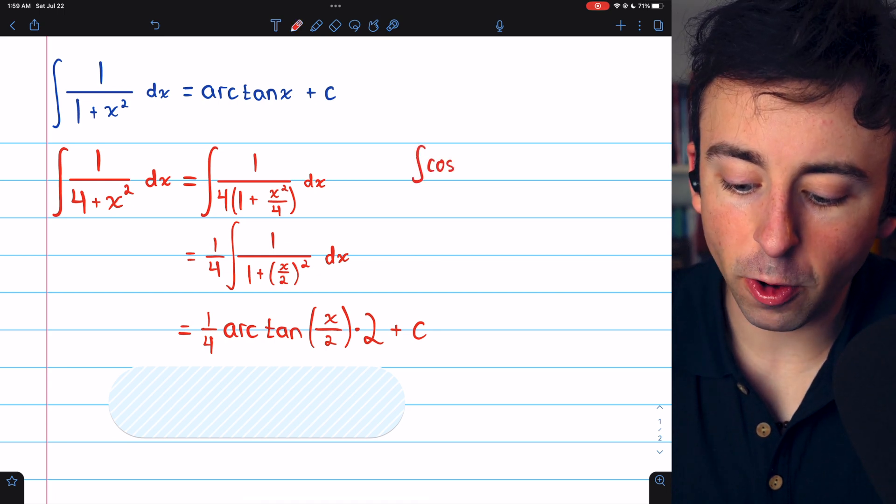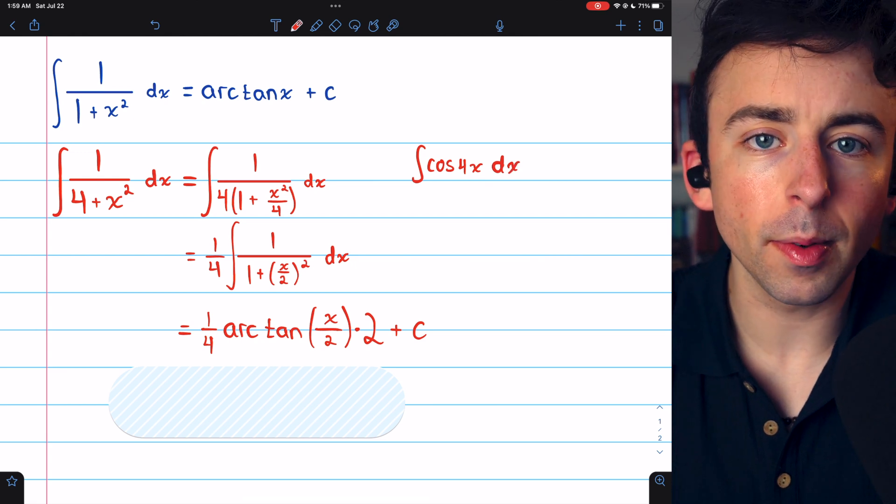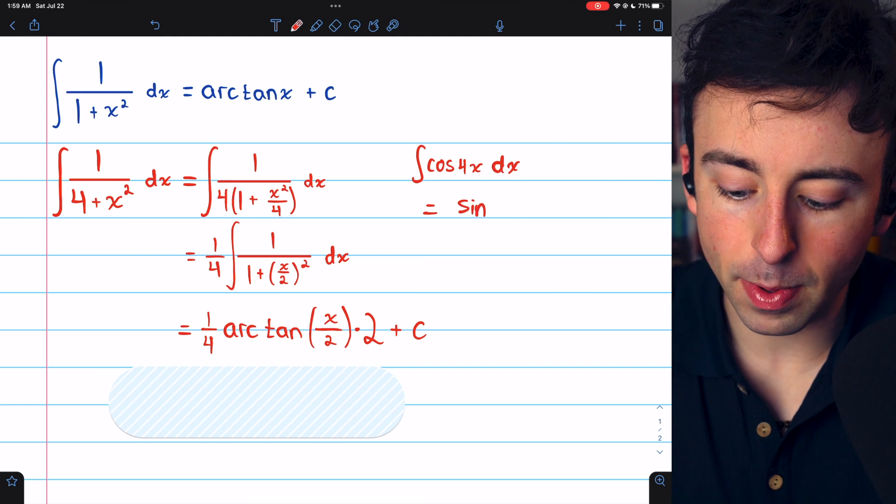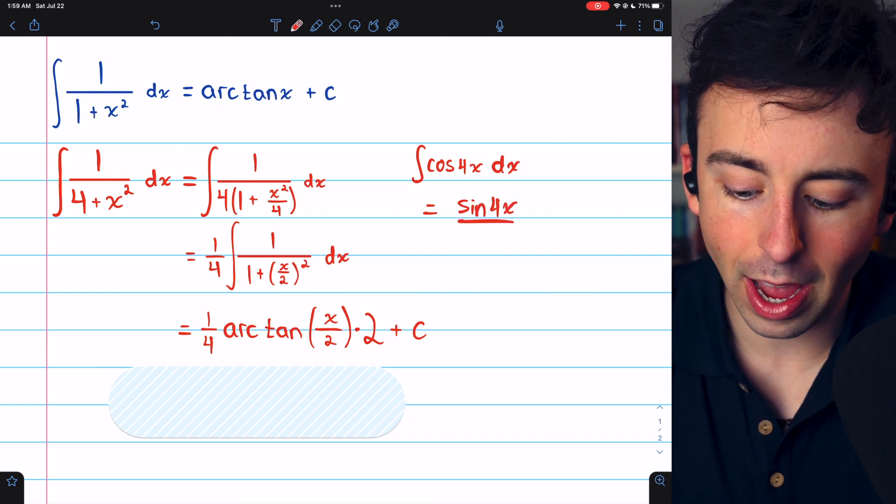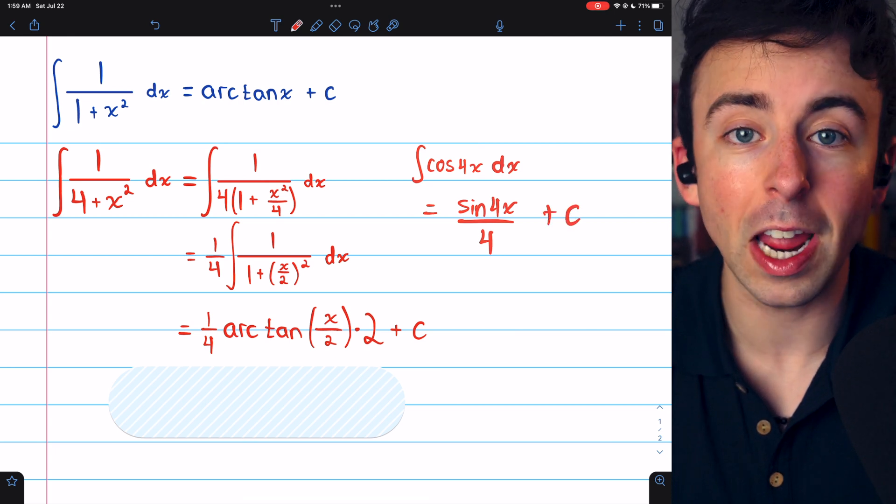This is just like how if you integrate cosine of 4x, you don't really have to use u substitution because the thing inside cosine is a linear function. It's just going to be sine of 4x and just divide by the derivative of the inside to account for the chain rule.